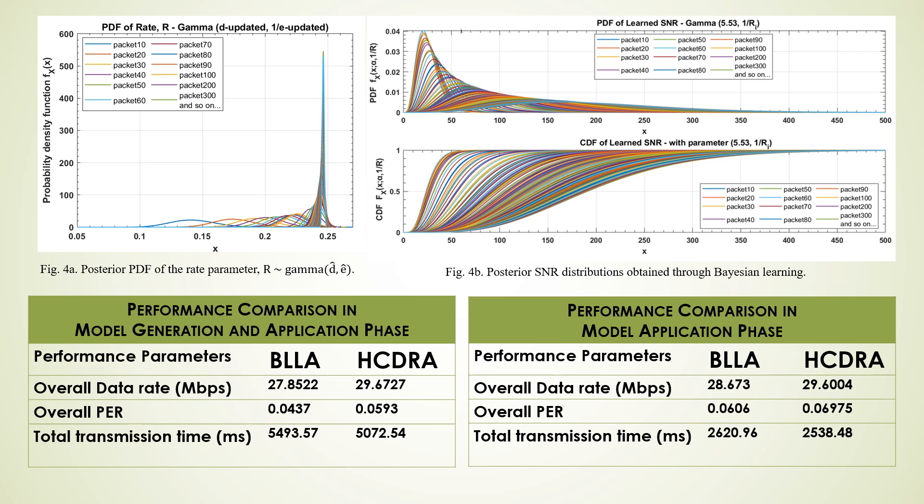Figure 4a shows the PDF of the rate parameter concentrating on the true value after multiple iterations. The PDF of SNR per packet is shown in Figure 4b. The learning window is set to 10 packets. The curves are plotted for every 10 packets until packet number 100, and later for every 100 packets to make the plots legible. The learning process underestimates the average SNR initially, but as the number of packets processed increases, the learned SNR distribution curve shifts towards the right, approaching the true channel SNR distribution as depicted in Figure 4b.